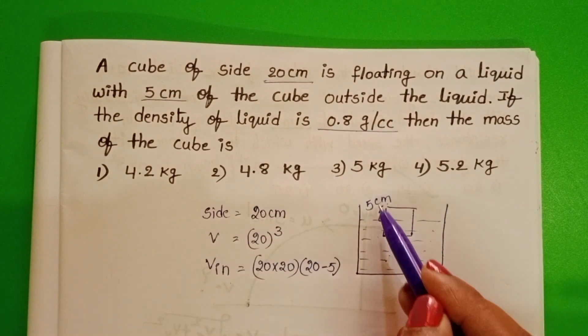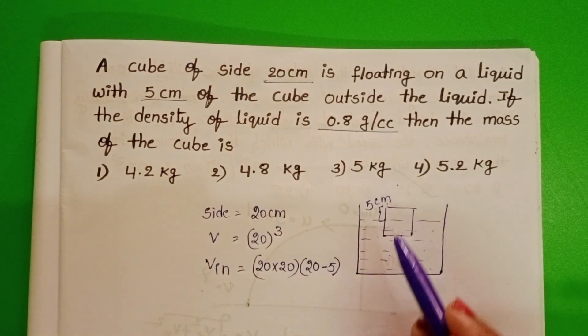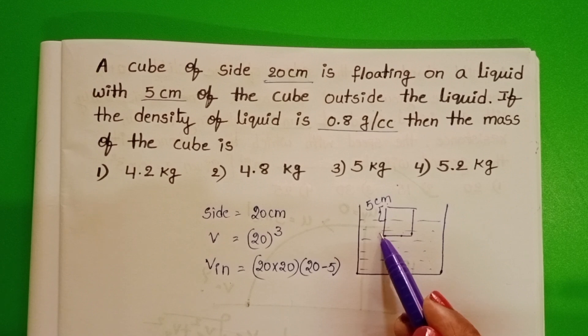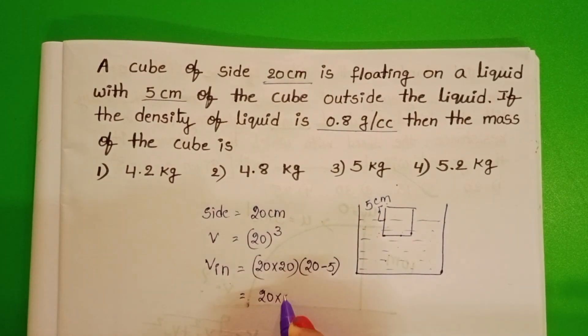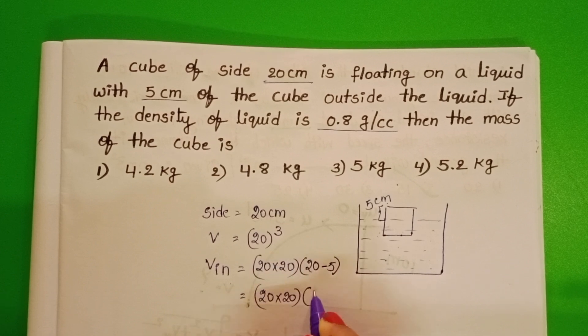In its length, 5 cm is out of the liquid, remaining 15 cm inside the liquid. So 20 into 20 into 15. This is V in.